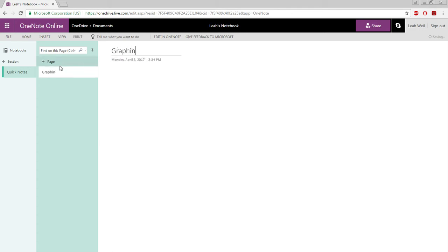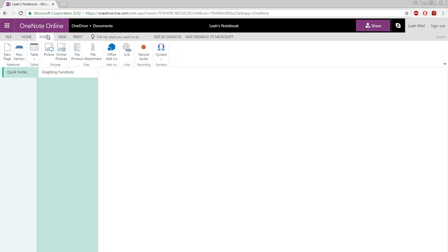I'll call this Graphing Functions, and then I will click down here. Next, I'll go up to the gray bar and click Insert. Below that to the right, you'll find Office Add-ins. Click that.